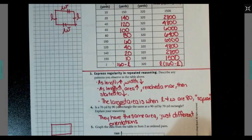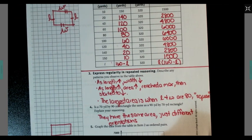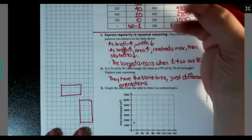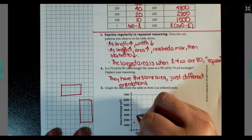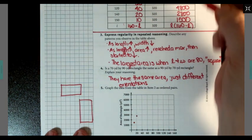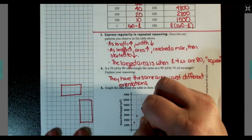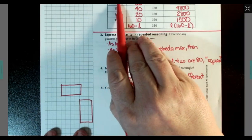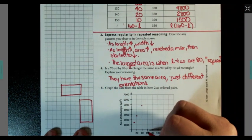So, 10, 1500. Then we have 20, 2800. Then we have 40, 4800. Then we have 60, 6000.